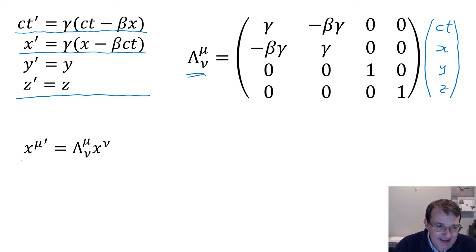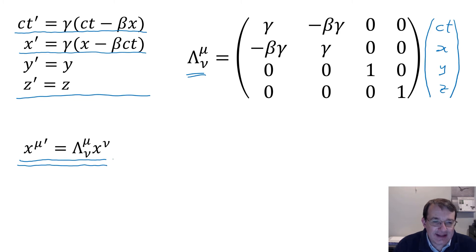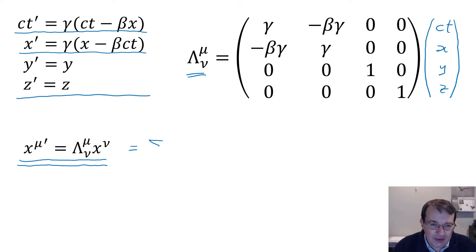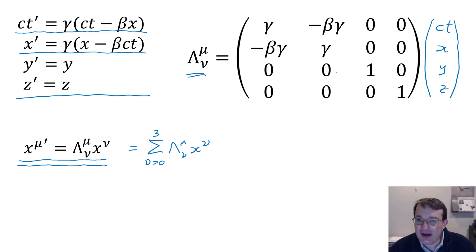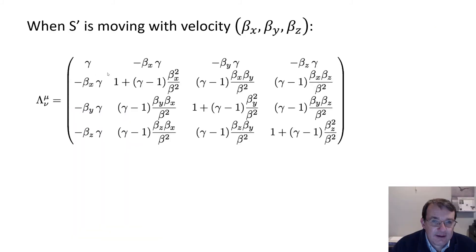This matrix, when multiplied by the four-vector, will transform the four-vector from one frame into another. We write that using this notation where repeated indices imply summation — this is the Einstein summation convention. It equals the sum over ν from zero to three of Lambda^μ_ν times x^ν. That's how we write matrix multiplication using summation convention.